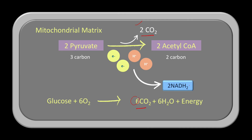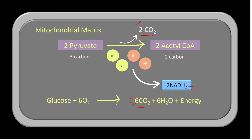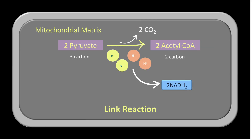NADH2 is used in the later stages of aerobic respiration to generate more ATP. But the most important product of this reaction is acetyl-CoA, which then moves on to the next step of cellular respiration — the Krebs cycle. Because the formation of acetyl-CoA from pyruvate links glycolysis to the Krebs cycle, this reaction is called the link reaction.